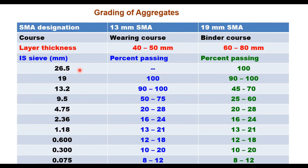SMA can be laid either as a wearing course or as a binder course. When laid as a wearing course, the thickness is 40 to 50 mm with a nominal aggregate size of 13 mm. When laid as a binder course, the thickness is 60 to 80 mm with a nominal aggregate size of 19 mm. The grading specified in IRC SP79 for both wearing course and binder course should be within the prescribed envelope.